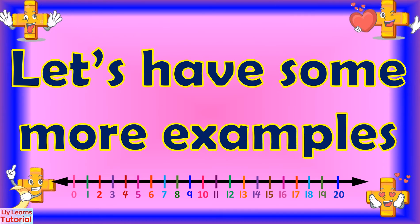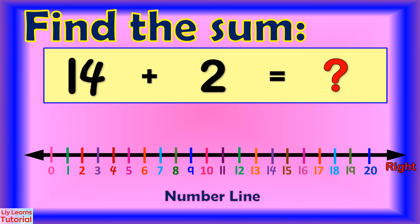Let's have some more examples. Find the sum of 14 plus 2. We start from the bigger number, which is 14. Then we jump 2 numbers to the right: 1, 2. We land on 16. So the sum of 14 plus 2 is 16.